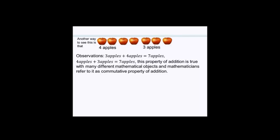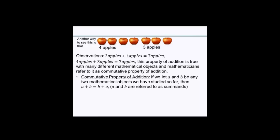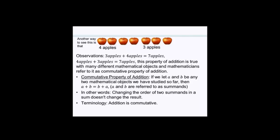Don't just say 'commutative property' — you have to mention the operation you're working with. So the correct terminology is 'commutative property of addition.' The observation is that if A and B are two mathematical objects with the same units, then A + B = B + A, where A and B are referred to as summands. Changing the order of two summands in a sum does not change the result.